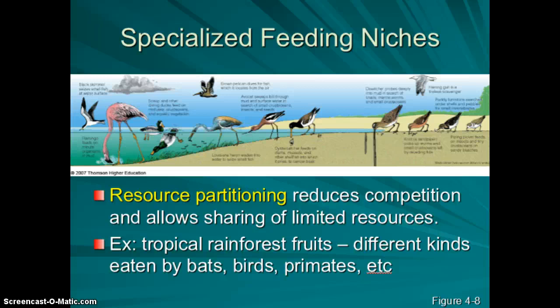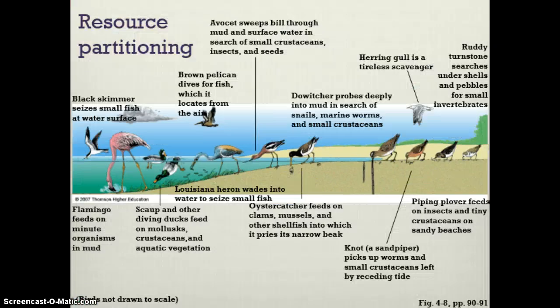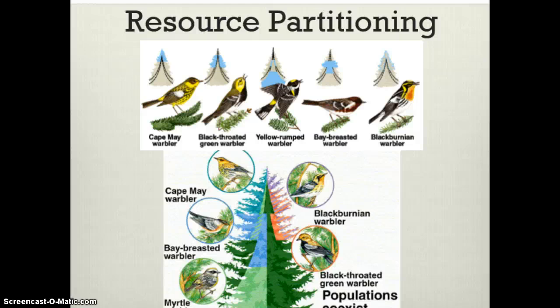In a tropical rainforest, bats, birds, and primates all depend on fruit but eat slightly different fruits and access them in different ways — allowing niche diversification. Shorebirds eat slightly different things from slightly different areas, another example of resource partitioning. Even in small ecosystems, like these warblers feeding in the same conifers, they move to different parts of the canopy, nest at different times, and eat slightly different parts.